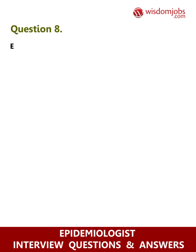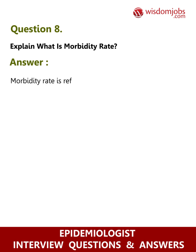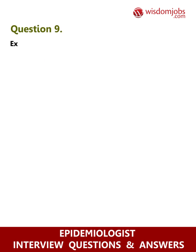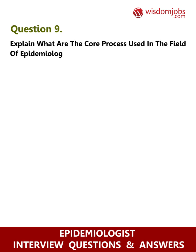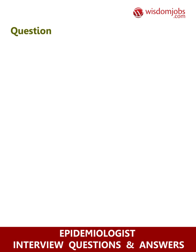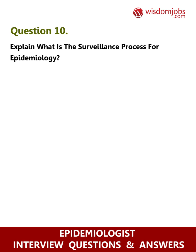Question 8: Explain what is morbidity rate. Answer: Morbidity rate is referred to as the number of existing or new cases of a particular disease or condition per 1,000 people. Question 9: Explain what are the core processes used in the field of epidemiology. Answer: The core processes are surveillance, screening, outbreak investigation, and assessing causation.